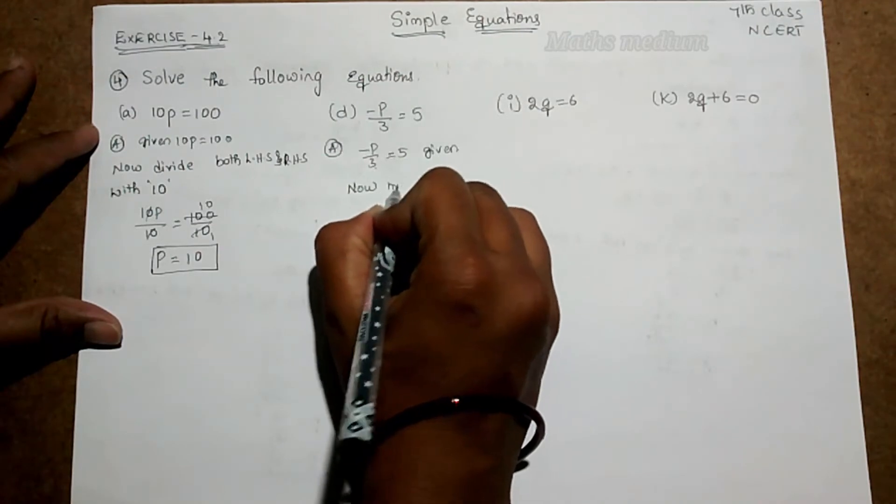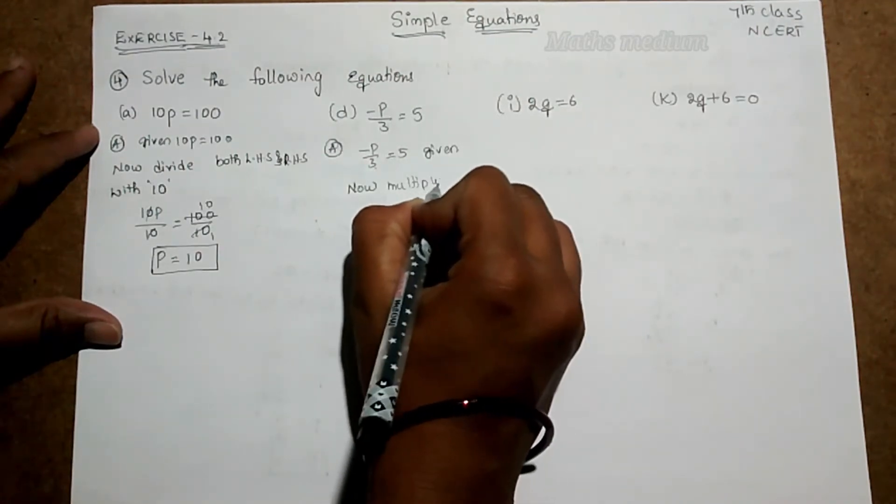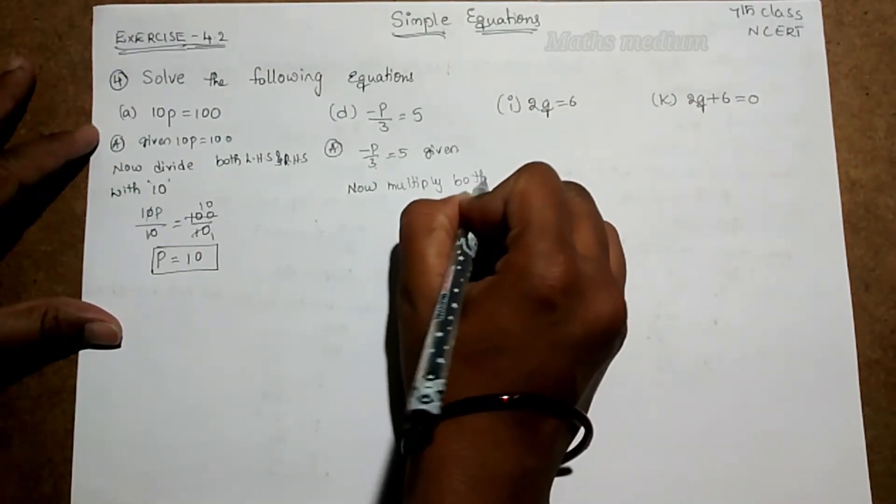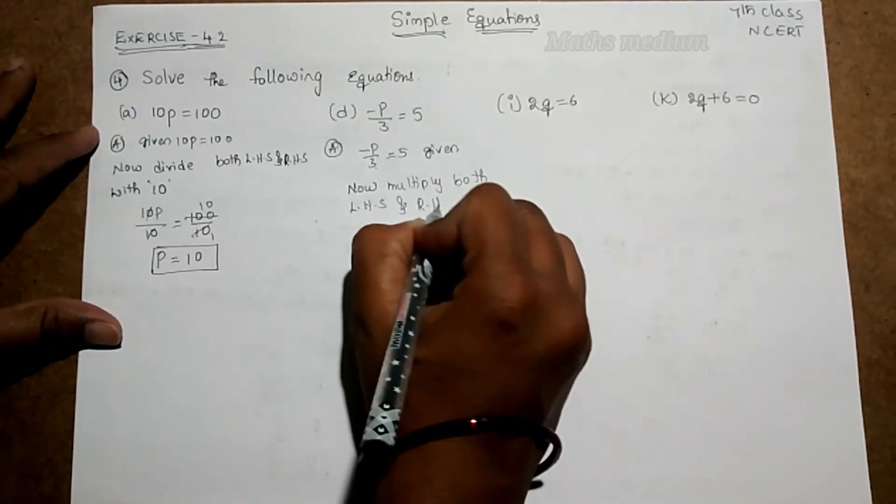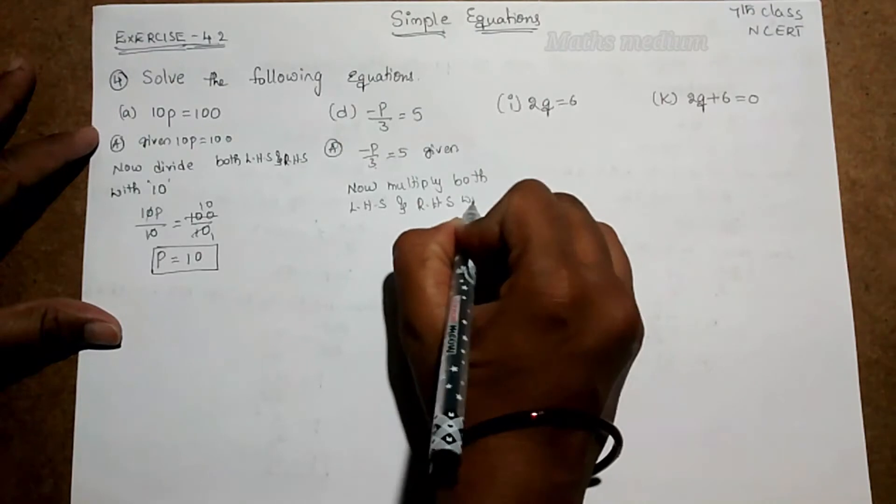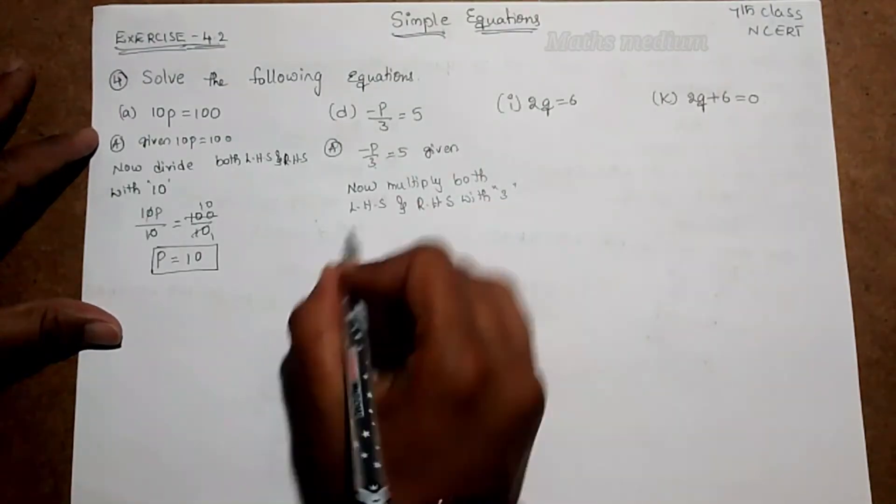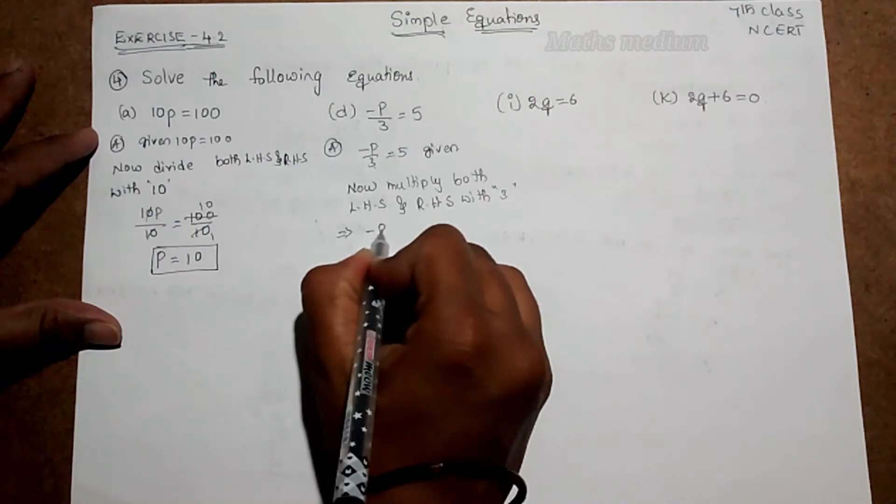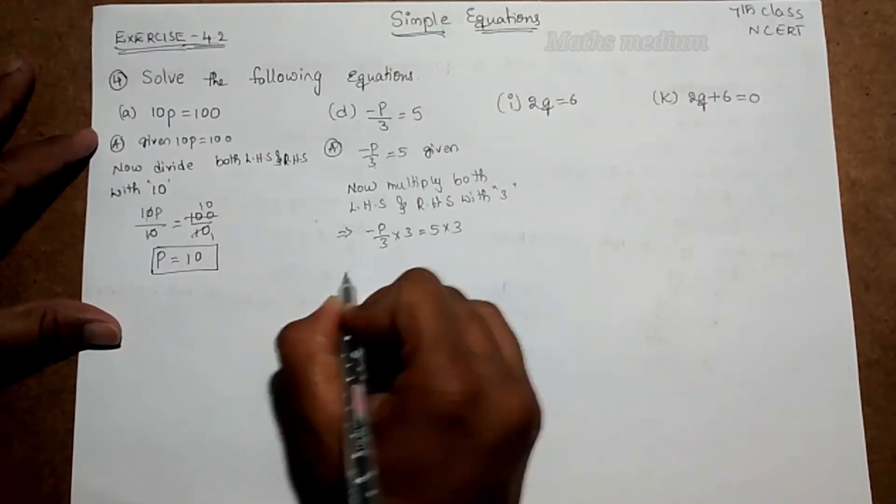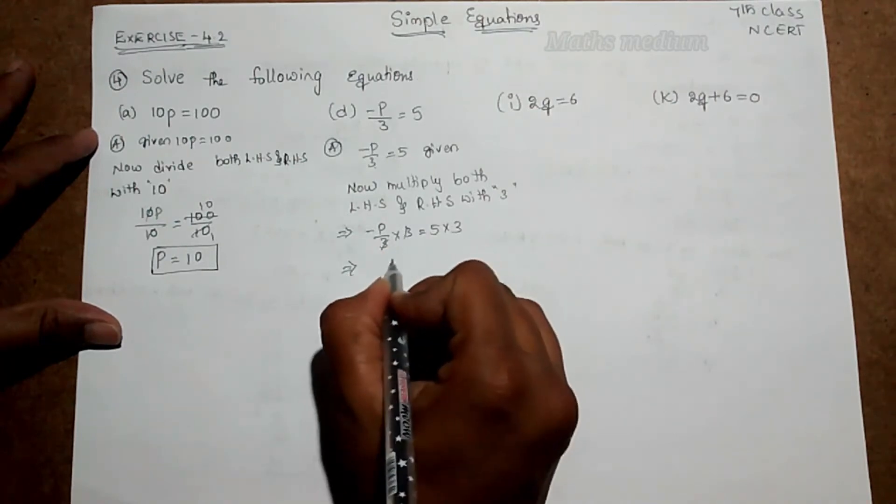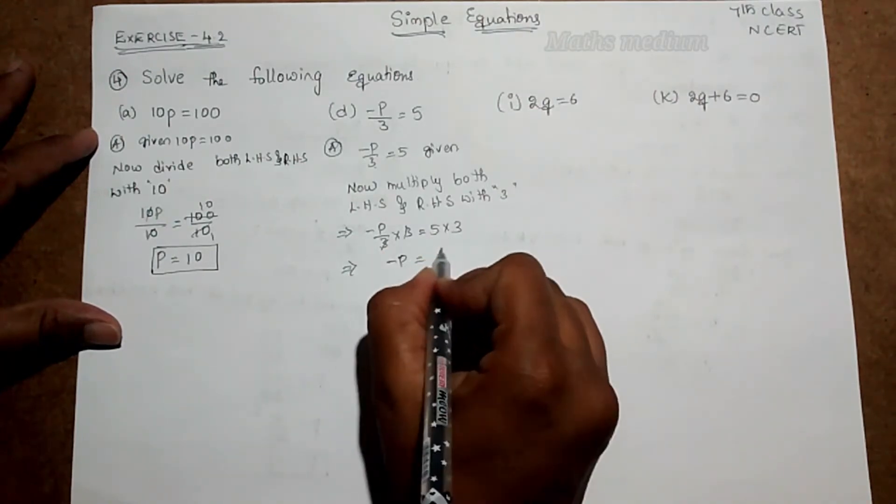So now multiply both LHS and RHS with 3. So minus p by 3 into 3 equal to 5 into 3. So here 3 and 3 get cancelled, minus p is equal to 5 times 3, which is 15.